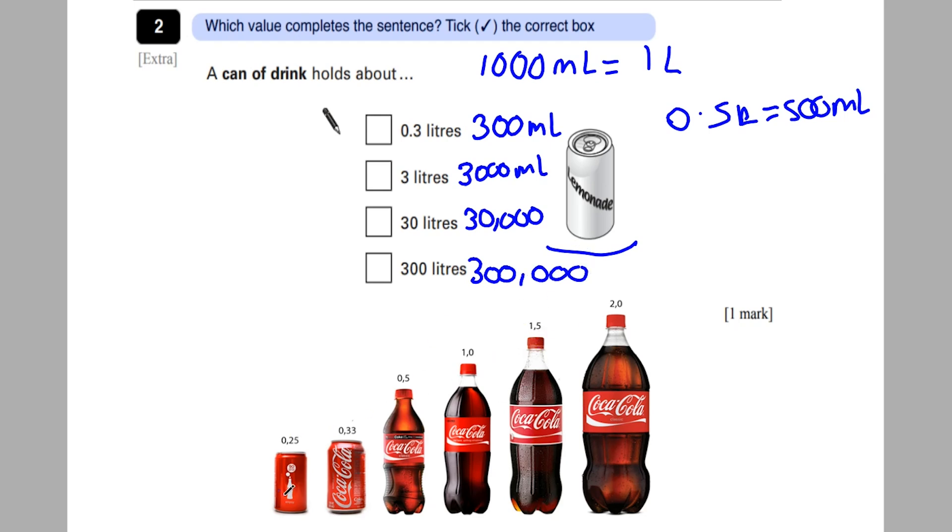Now, just to give an indication of size, I've just included this picture here. However, they wouldn't get this on their SATs. You can see that a small can is 0.25 litres or 250 millilitres. A normal can is 330 millilitres. A bottle of coke is 500 millilitres. You've got one litre, 1.5 litres which is 1,500 millilitres. And then two, this big bottle is 2,000 millilitres or two litres. So you can see even the biggest bottle of coke is not actually close to 3,000 millilitres or three litres. Definitely not 30 litres and definitely not 300 litres.